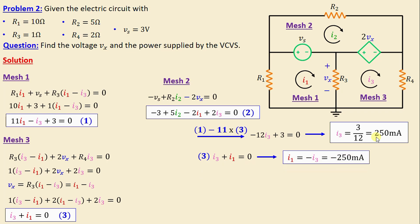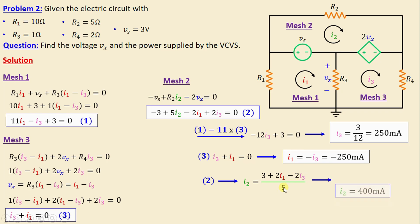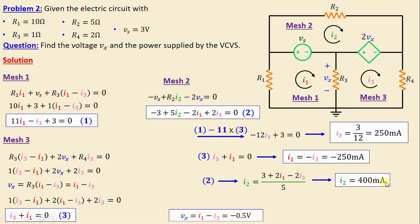From equation three, i3 plus i1 equals zero, so i1 is equal to negative i3, which is negative 250 milliamps. From equation two, i2 is equal to (3 plus 2 i1 minus 2 i3) over 5. Replacing i1 and i3 with their numerical values, we obtain i2 is equal to 400 milliamps.